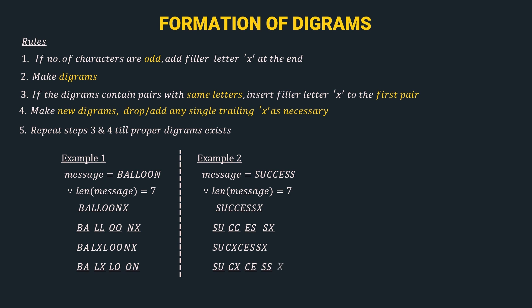We still have SS — a pair with same letters — so we do not have proper digrams yet. Repeat steps 3 and 4. Insert X between the two S's: SU, CX, CE, SXS. Re-pair: SU, CX, CE, SX, and a single trailing S. As rule 4 says, we add an X to the end to make a pair: SX. Now all diagrams are proper — no pair has the same letter — so we stop the iteration.